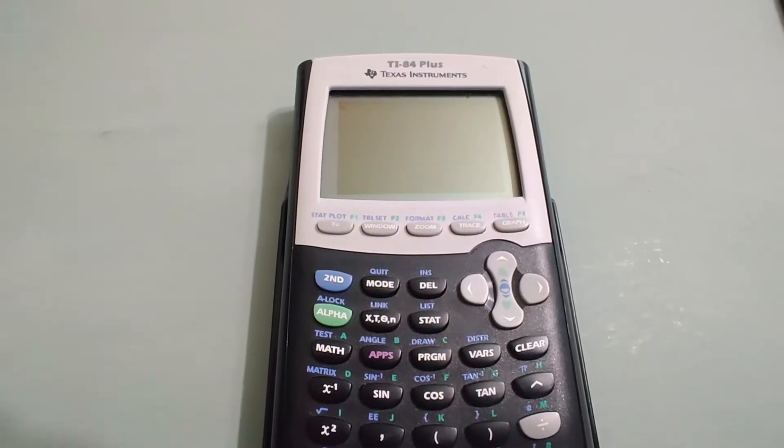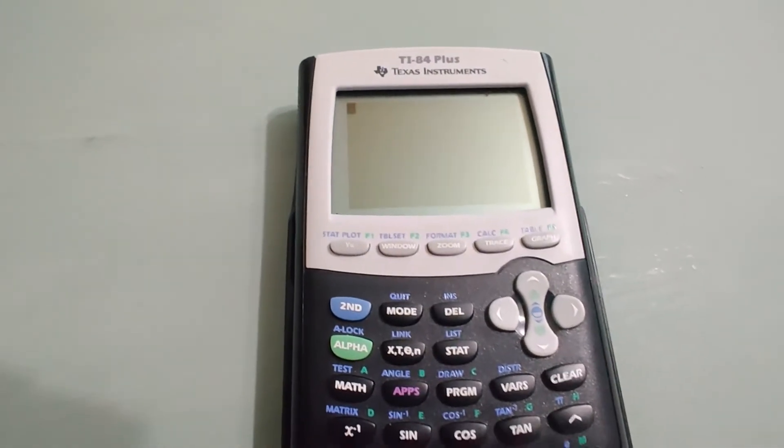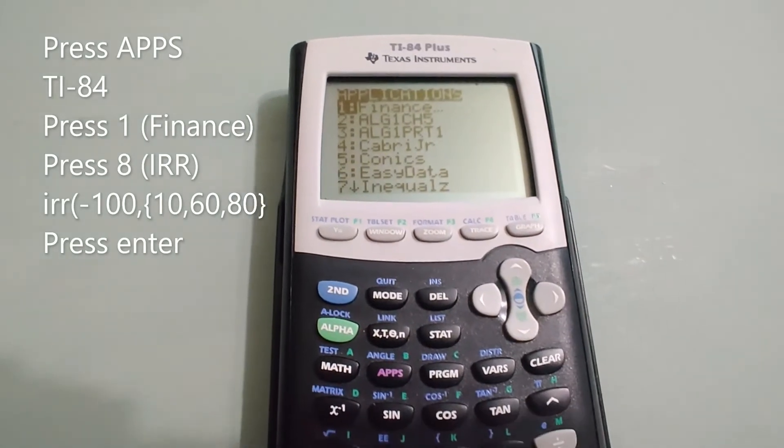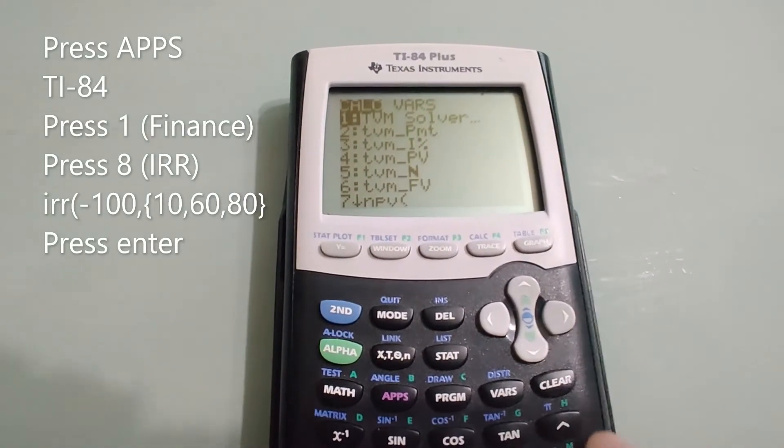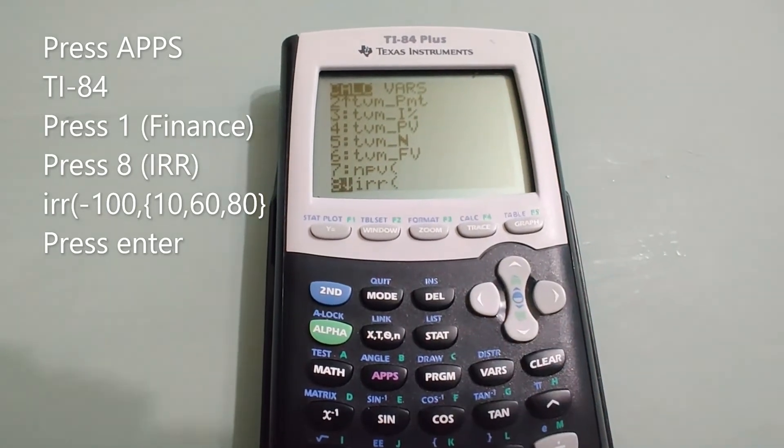Okay, this is how to find the IRR using the TI-84 Plus calculator. You're gonna press apps and number one for finance and then scroll all the way down or just press eight for IRR.